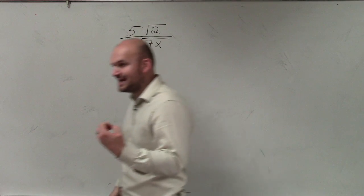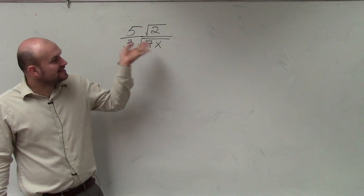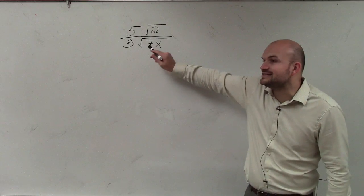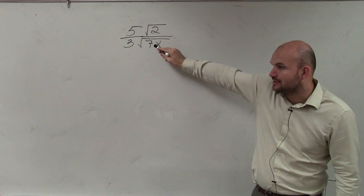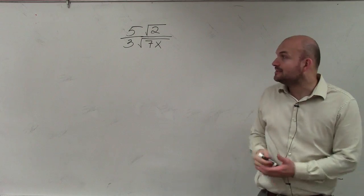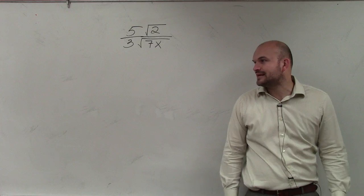So what we can do in this case is we can actually do something special. We still can simplify this, but what we're going to do is we need to get, we don't want to divide by a radical. So since we can't simplify this, I want to get this radical off the bottom. Now, I can't take the square root of 7, right?